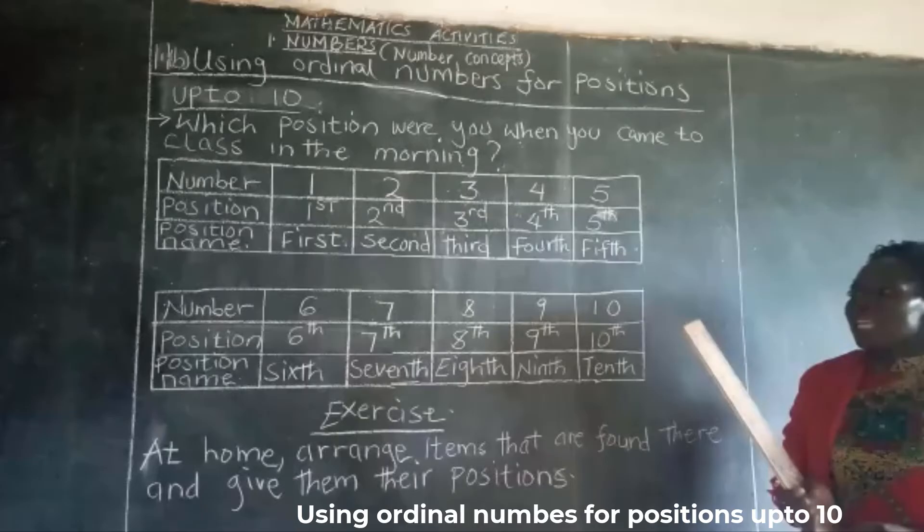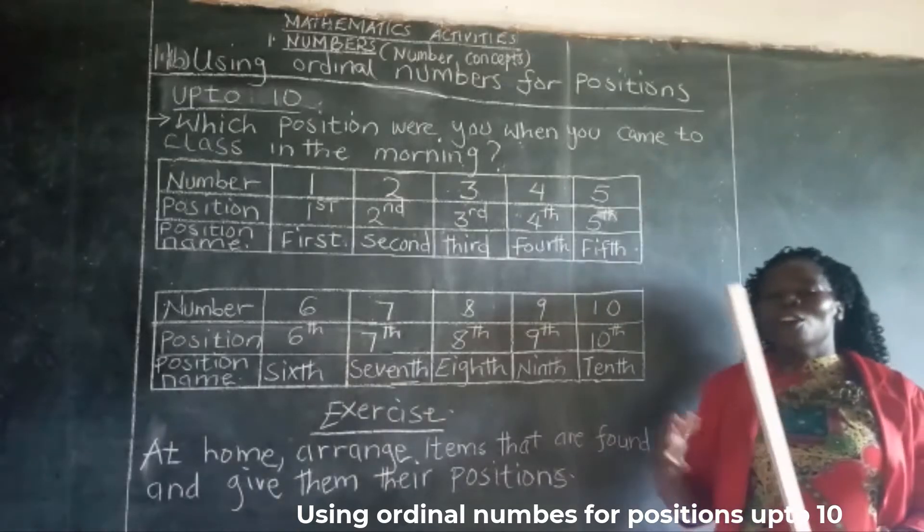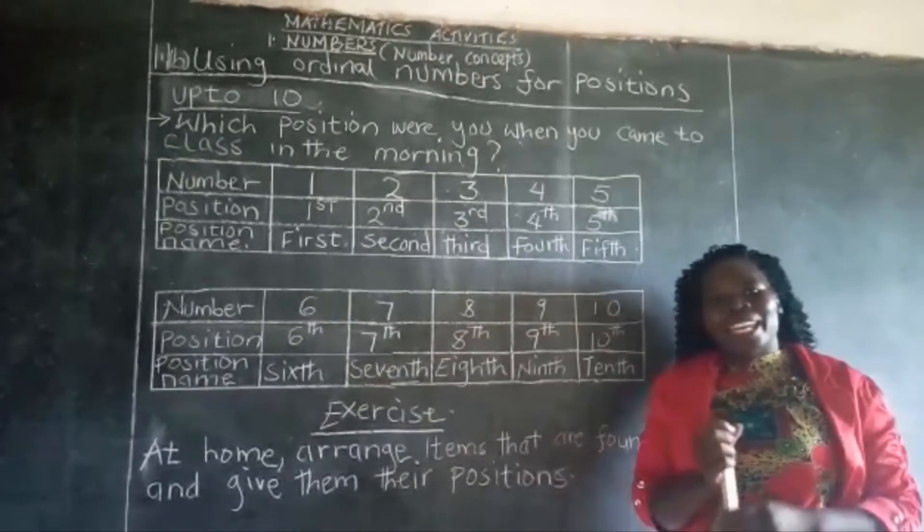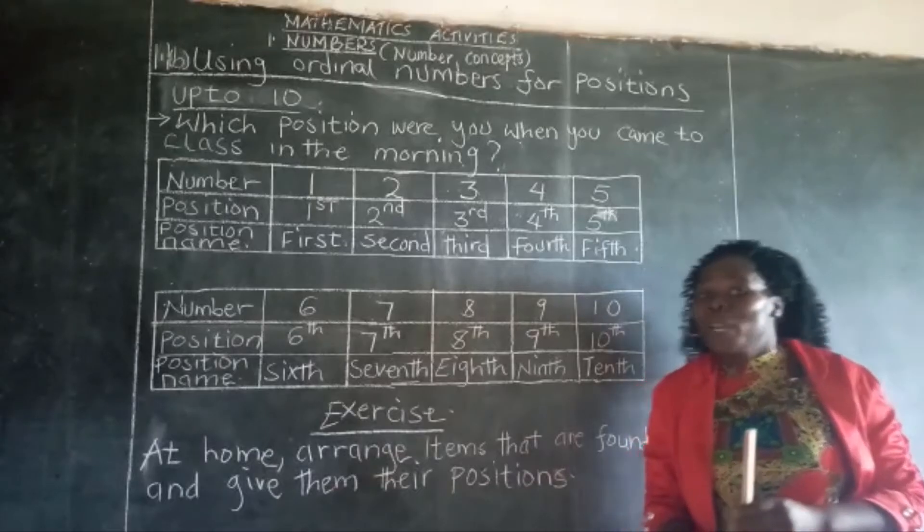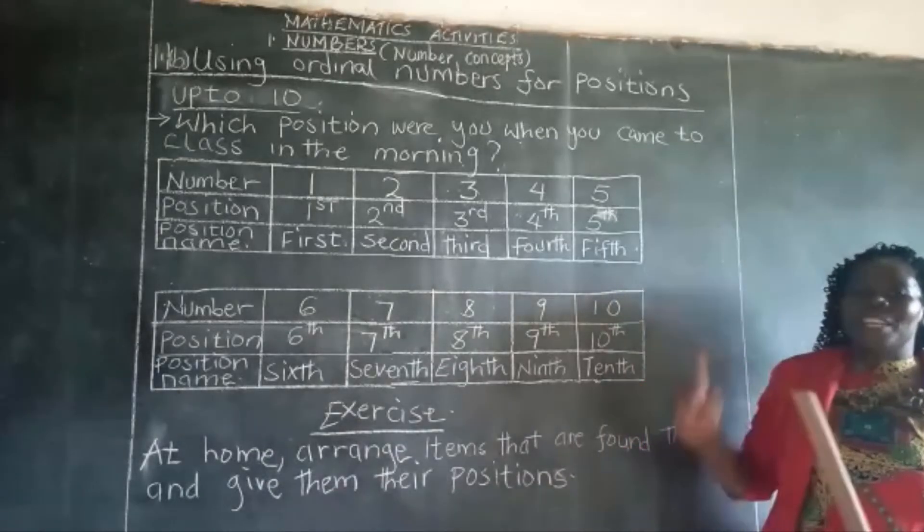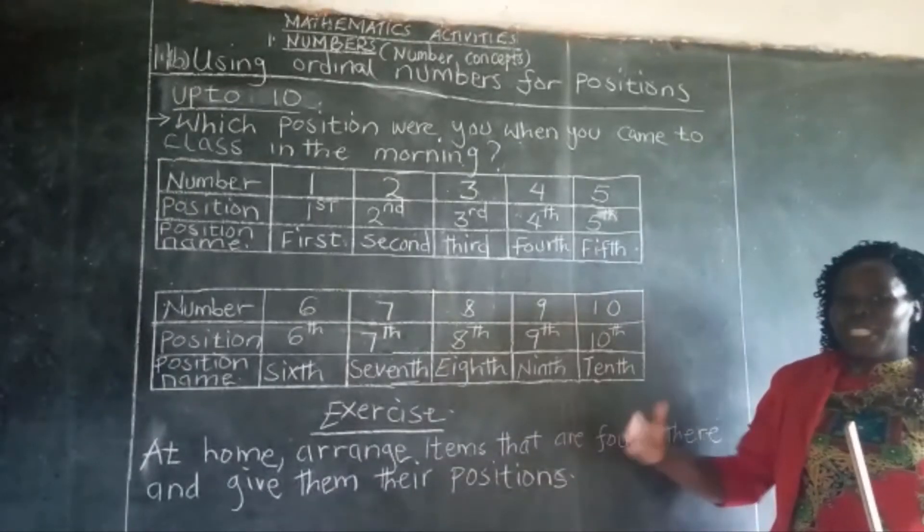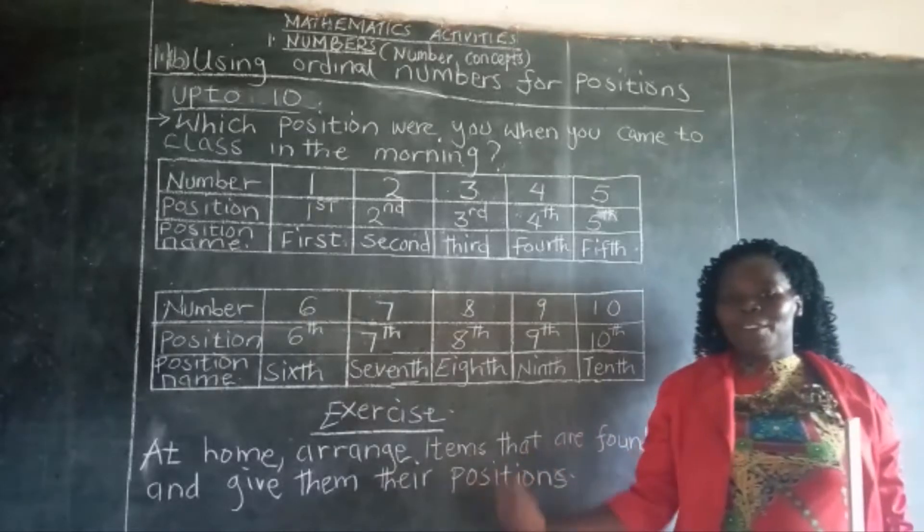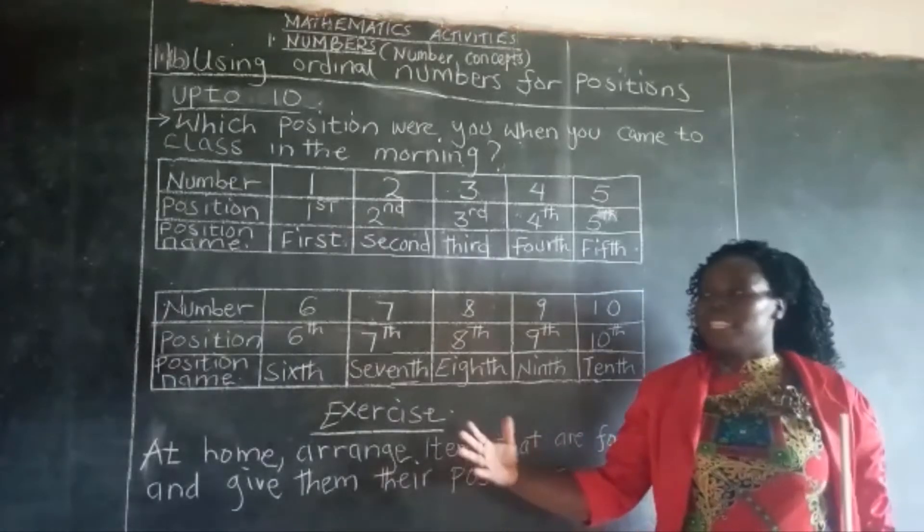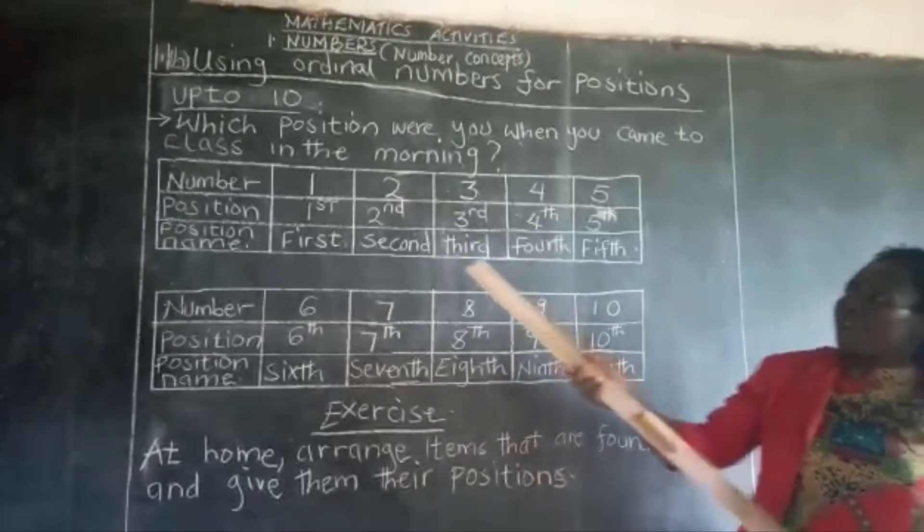Ordinal numbers are numbers that are used to give order. Like for example learners, when you go for a race, when you are running, we have the first person, the person who reaches at the end line first, we have the second and the third. So here we have a number,